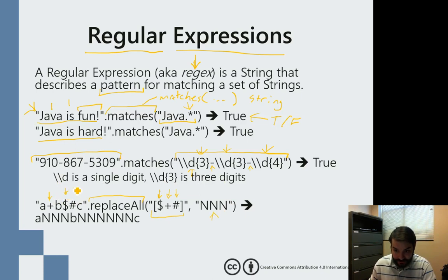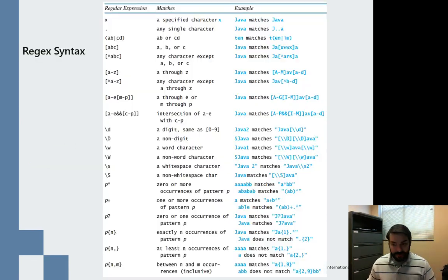And so we see if we look at our string, I've got a plus sign, a dollar sign, and a pound sign, hashtag. Replace each instance with three n's. So as you can see, we have a large subset of these that we can start to build from and work with.